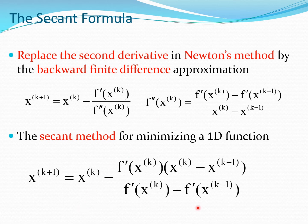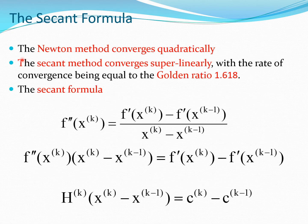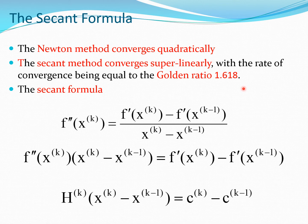The secant formula uses f' and the value of x, with the f'' term removed. Newton's method converges quadratically, while the secant method converges superlinearly with a convergence rate equal to the golden ratio 1.618 — one more place where the golden ratio appears.